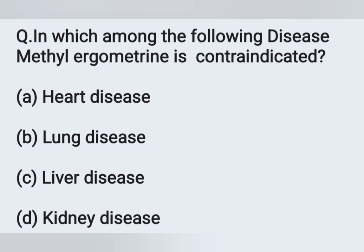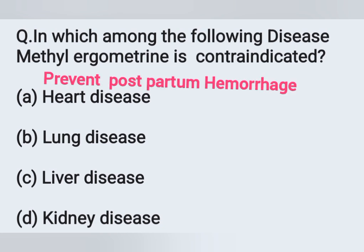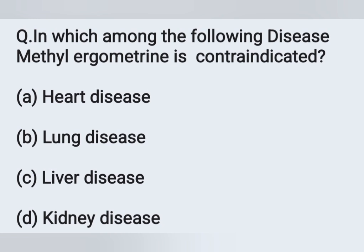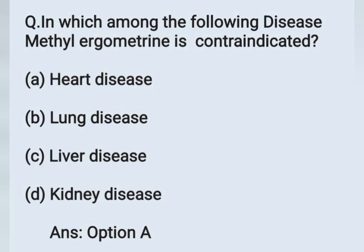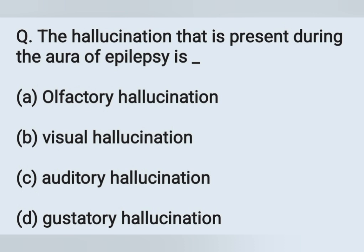The next question: In which of the following diseases is methyl ergotamine contraindicated? Options: Option A: heart disease, Option B: lung disease, Option C: liver disease, Option D: kidney disease. Methyl ergotamine is mainly given to prevent postpartum hemorrhage, and it can cause hypertension or increased BP, so it is contraindicated in case of heart disease. Option A is the correct answer.